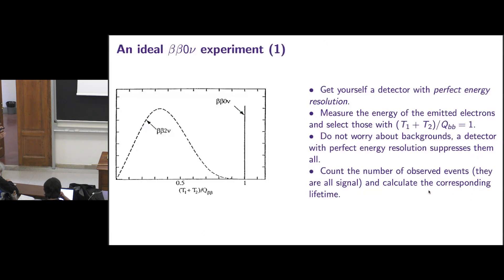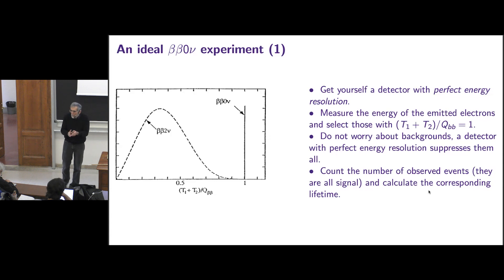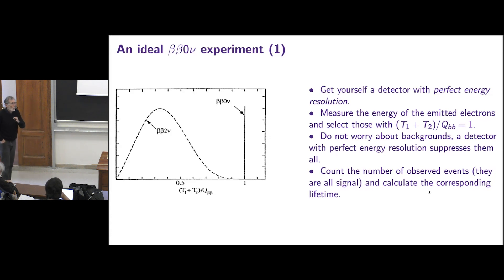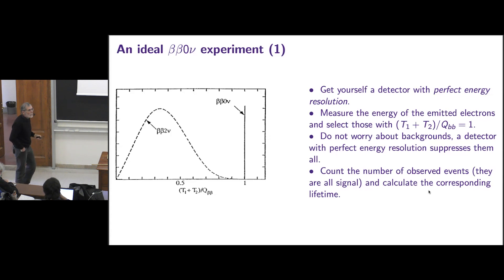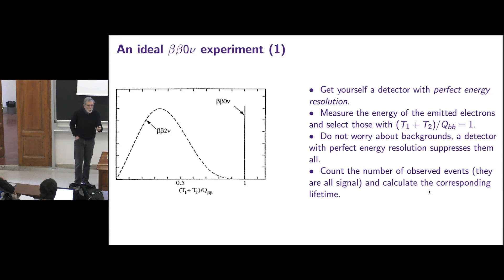So you need to build large detectors, but actually because Avogadro's number is so big, not so large as a matter of fact. Let me go through the basic ideas to build an ideal experiment and give you one recipe that will not fail you. If you can implement that recipe, we are done — you get the automatic Nobel Prize, we make a discovery, or get infinite sensitivity. The simple recipe is: give me a detector with perfect energy resolution. Perfect doesn't mean almost perfect. Almost perfect is GERDA, almost perfect is LEGEND, but this is only almost perfect.